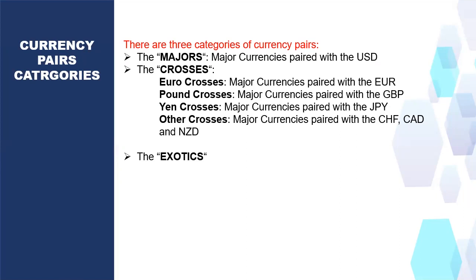Then there are the Crosses. There are different types: currencies paired with the euro are called euro crosses; those crossed with the pound (GBP) are called pound crosses; those crossed with the JPY are called yen crosses; and those paired with the Swiss franc, Canadian dollar, and New Zealand dollar are called other crosses.